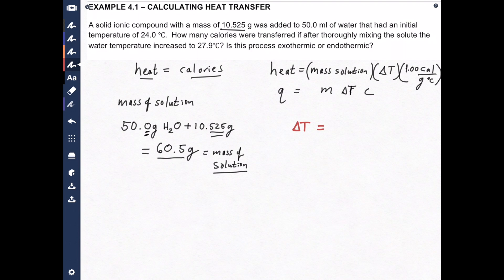So take your final temperature, which is 27.9 degrees Celsius, subtract out the initial temperature, which is 24.0 degrees Celsius. And you should get, it looks to me like 3.9 degrees. That is our change in temperature.